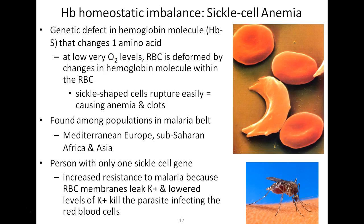Interestingly, this sickle cell trait persists in the genome because carriers — those with only one sickle cell gene — have an increased resistance to malaria. This is because red blood cell membranes in carriers leak potassium, and lowered potassium levels kill the malaria parasite. In summary: as a homozygous dominant you are unaffected, as a homozygous recessive you have sickle cell anemia, but as a heterozygote you have an advantage if living under the threat of malaria.